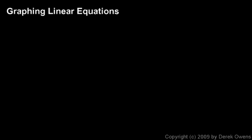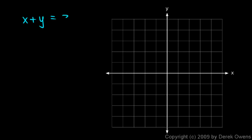We'll talk about graphing linear equations. The word 'linear' means that the graph is a line. So far in this section we've looked at equations with two variables and the coordinate plane, and now we're going to put those ideas together. An equation with two variables can be used with the coordinate plane to make a graph.